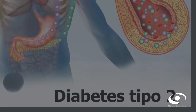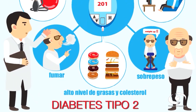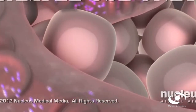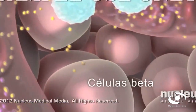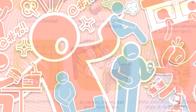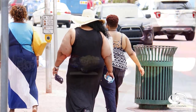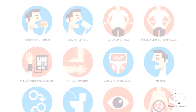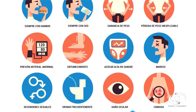La diabetes tipo 2, antes conocida como no insulino dependiente o de inicio en edad adulta, es la más común entre la población. El organismo no utiliza adecuadamente la insulina producida por el páncreas; es decir, existe resistencia a la insulina. Este padecimiento es multifactorial, pero existen causas que incrementan la probabilidad de que se presente, tales como la obesidad, la inactividad física, la mala alimentación y la exposición a diversos contaminantes. En la tipo 2, los síntomas pueden presentarse más lentamente.